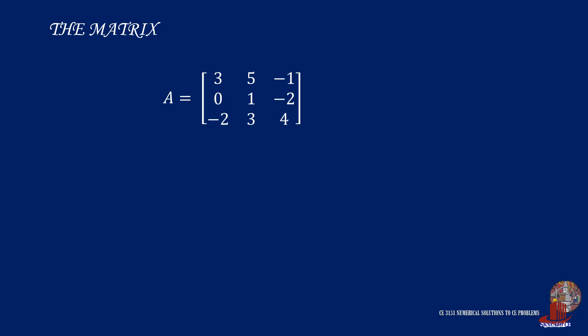To discuss the procedure of taking matrix inversion, we use matrix A with elements 3, 5, negative 1, then 0, 1, and negative 2, with negative 2, 3, and 4. The procedure of taking the inverse contains three steps. We can start with the adjugate of the matrix over its determinant, or make it into three simple steps of taking the cofactor, transpose it, then divide it by the determinant.